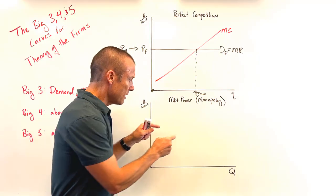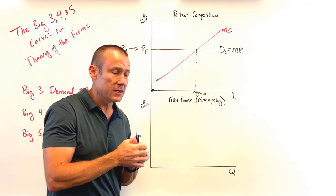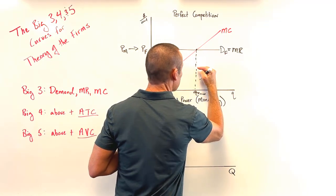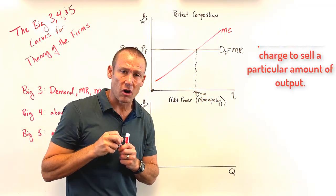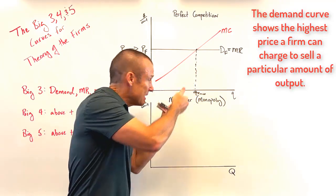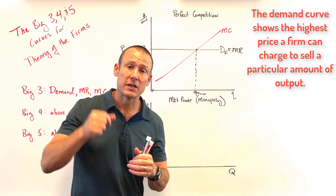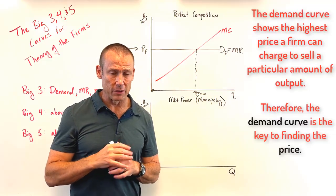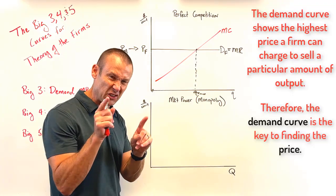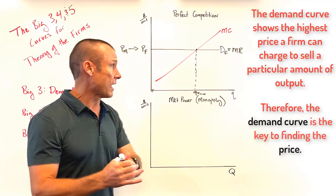Now let's find price. Once you know the output, go to the demand curve. The demand curve shows the highest price you can charge and still sell that level of output. For perfect competition, the price is already visible as the flat demand line, but I'll phrase it this way because it will make more sense when we get to market power. So we have output and price — the big three have done their job.